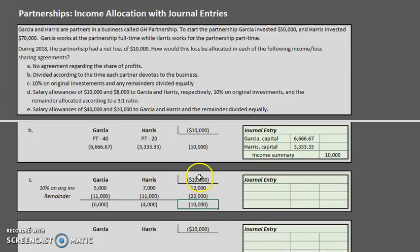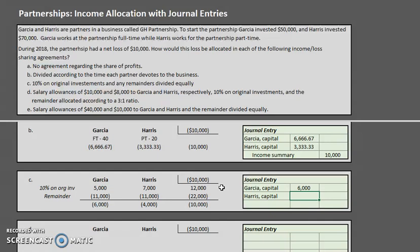Final check: negative $6,000 plus negative $4,000 equals negative $10,000, matching our net loss. For the journal entry: Garcia's capital goes down by $6,000 — debit to decrease the capital account. Harris's capital goes down by $4,000 — also a debit. Income summary is credited for $10,000 for the closing entry.